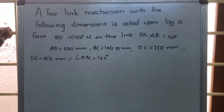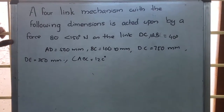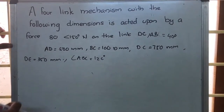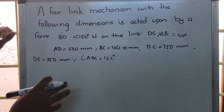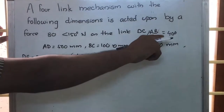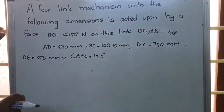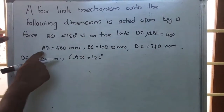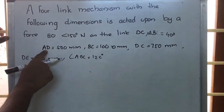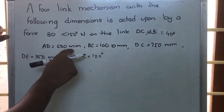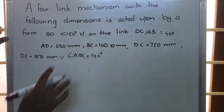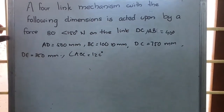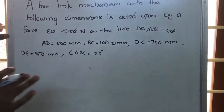A four-link mechanism with the following dimensions is acted upon by a force of 80N. The dimensions are: AB is equal to 400mm, AD is equal to 500mm, BC and DC are given, and angle ABC is also given.